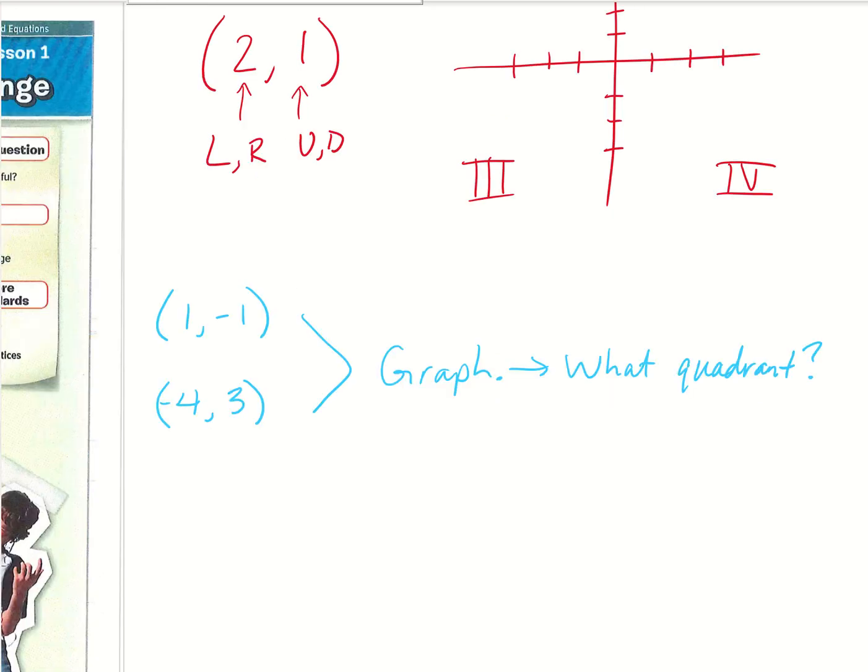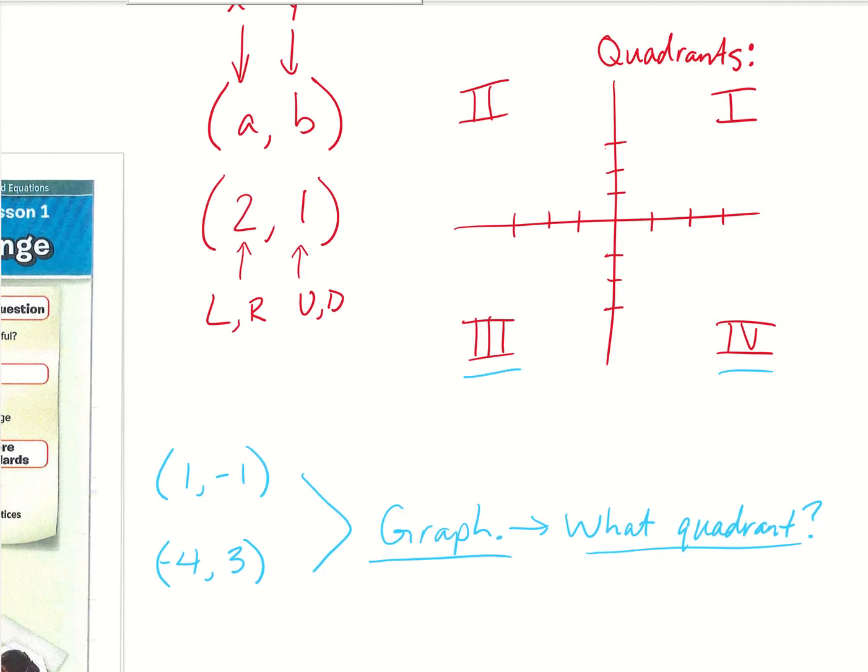Before we do move on, I want you to go ahead and do these two examples that I have written down here. We have the ordered pairs (1, -1) and then the ordered pair (-4, 3). The first thing I want you to do is graph it, and then after you've graphed it, I want you to tell me what quadrant you're in. Go ahead and pause the video and do that now.